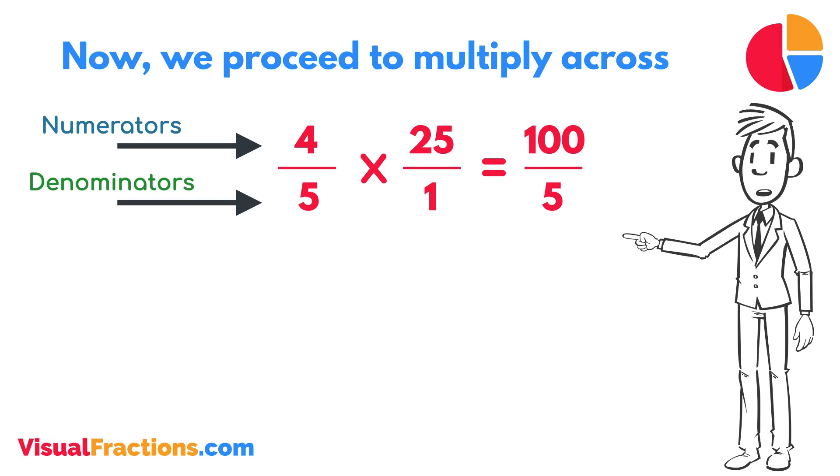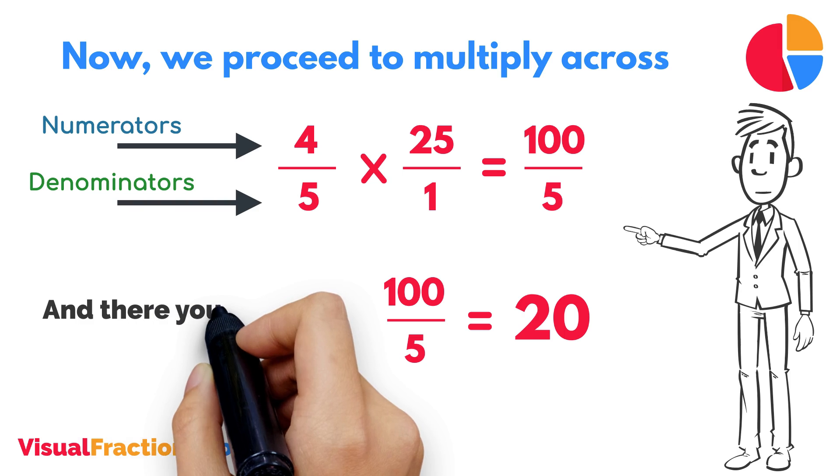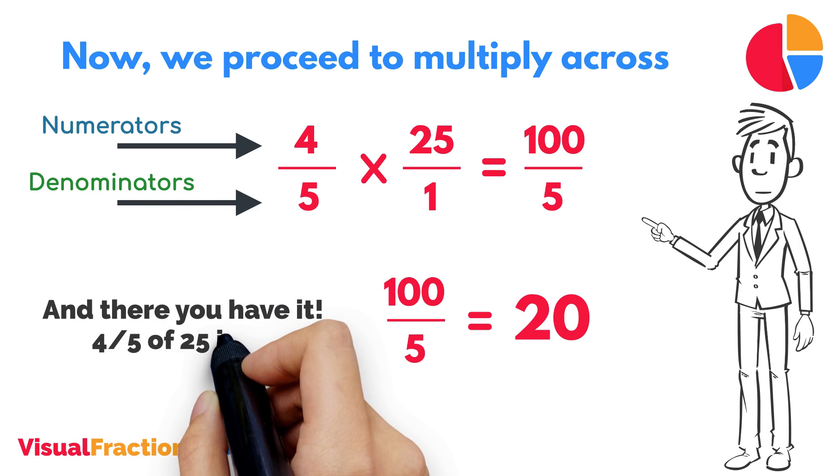To find the final answer, divide the numerator by the denominator. So, 100 divided by 5 equals 20. And there you have it—4/5 of 25 is 20.